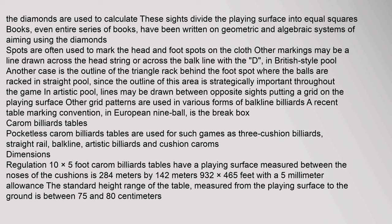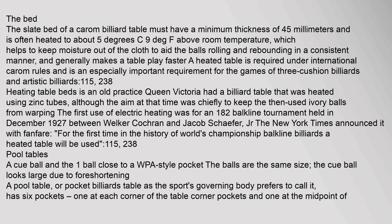Pocketless carom billiards tables are used for such games as three-cushion billiards, straight rail, balkline, artistic billiards, and cushion caroms. Regulation carom billiards tables have a playing surface measured between the noses of the cushions of 2.84 meters by 1.42 meters (9.32 by 4.65 feet), with a five-millimeter allowance. The standard height range of the table, measured from the playing surface to the ground, is between 75 and 80 centimeters. The slate bed of a carom billiard table must have a minimum thickness of 45 millimeters and is often heated.